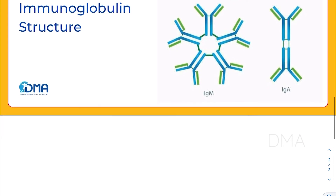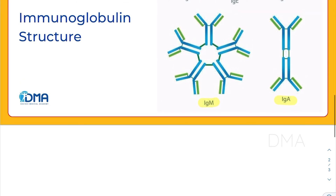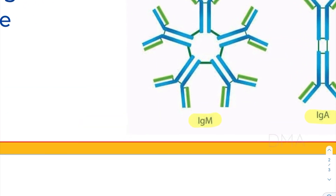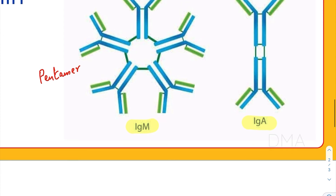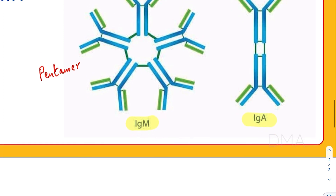You should also be knowing about IgM and IgA. IgM is a pentameric structure, and IgA is a dimeric structure.